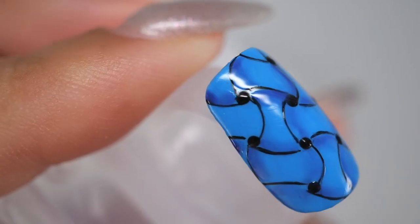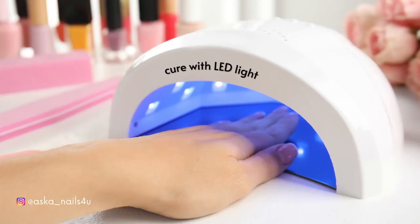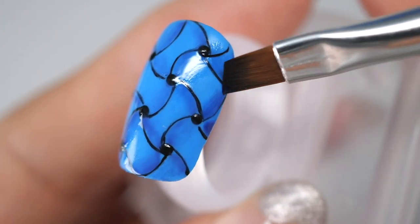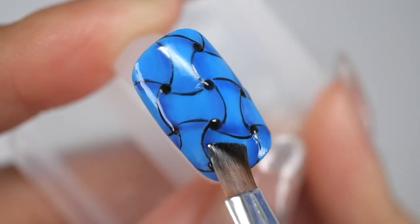Once you finish drawing the shadow over the entire surface, cure it. Next, since the shadow you just drew still seems a little light, draw it again in the same way to make the shadow darker.